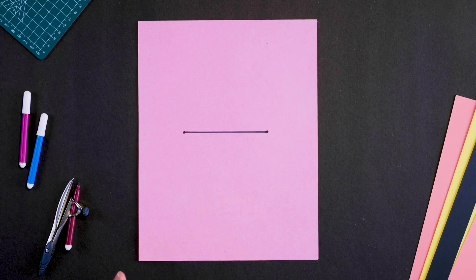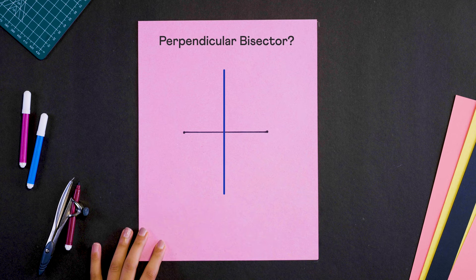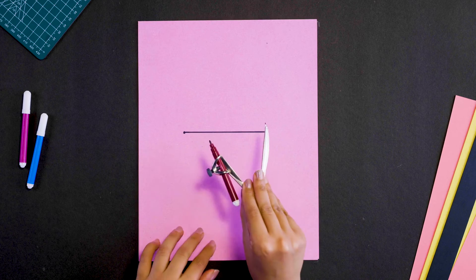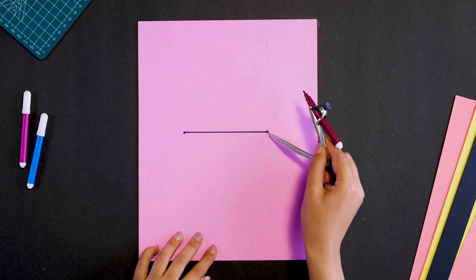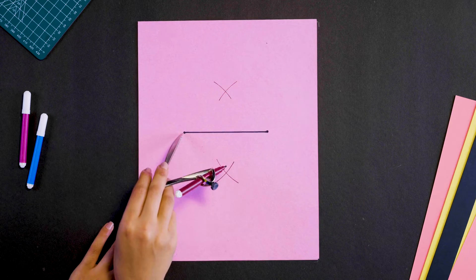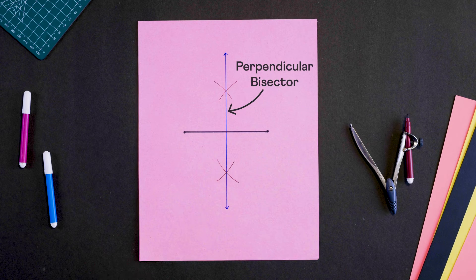Here's a line segment. How can we draw its perpendicular bisector? It is a line that divides this segment in half at right angles. Let's use our tools. Using a radius greater than half the line's length, draw arcs from each end. Repeat on the opposite side. And that's the perpendicular bisector.